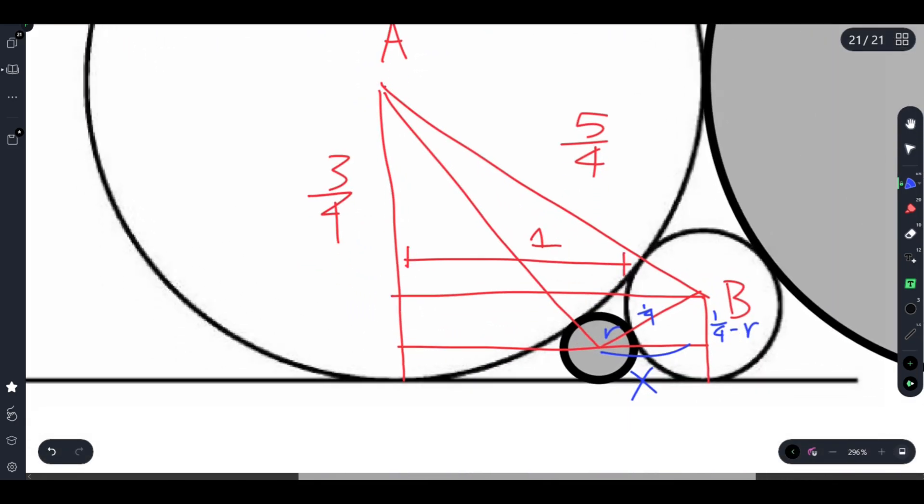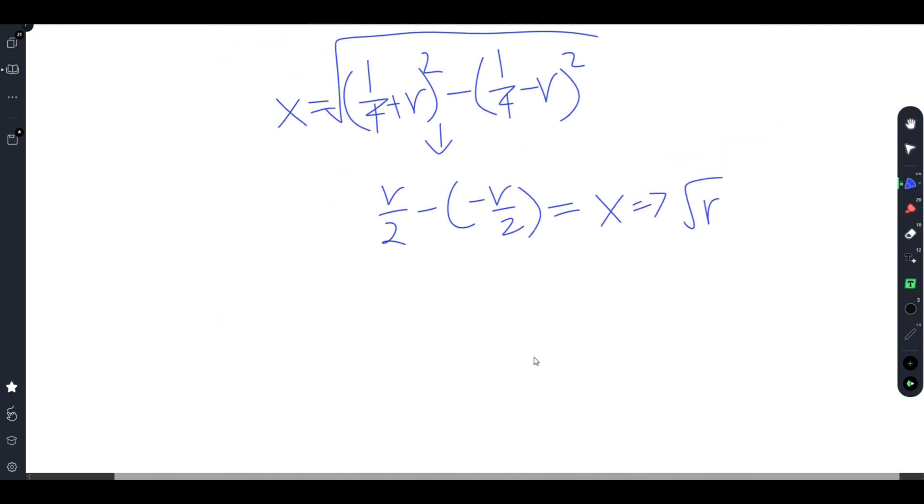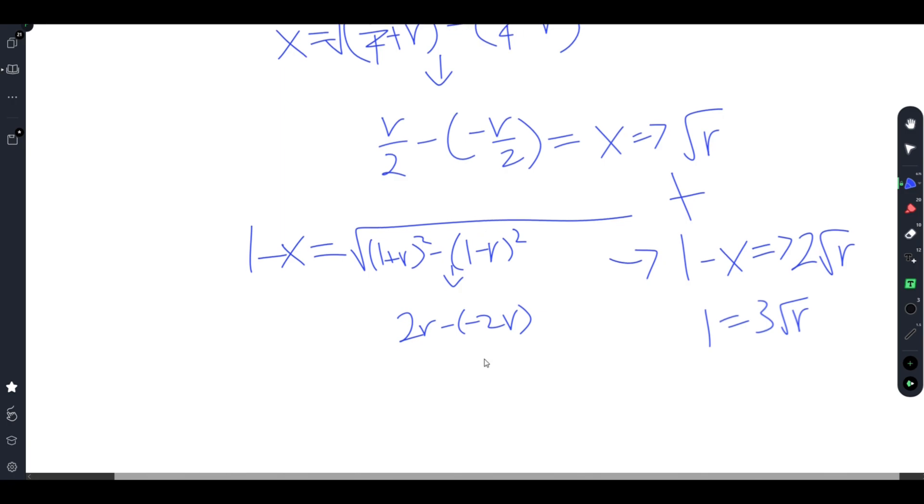For this side we have 1 minus x because this is 1. This is 1 minus r and this is 1 plus r. So we can do the same thing. 1 minus x is equal to 1 plus r minus 1 minus r squared. This gets us 2r minus negative 2r. So 1 minus x gives us 2 root r. So adding these up we get 1 is equal to 3 root r. So root r is equal to 1 over 3. r is equal to 1 over 9.